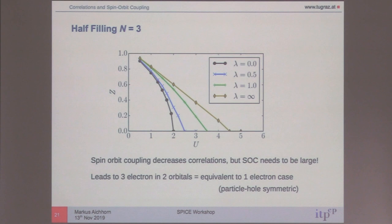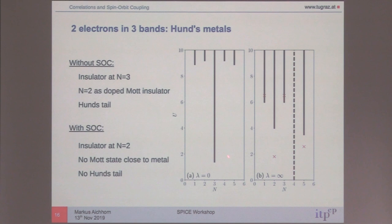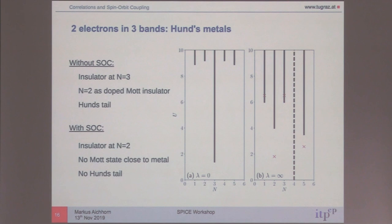An audience member asks for the definition of Hund's metal. There is no real definition, but in the phase diagram, it is the metallic part in the region between the Mott transition at half-filling and the Mott transition at a different doping — when you see an S-shape in your quasiparticle renormalization Z. It's related to the closeness to the Mott state.